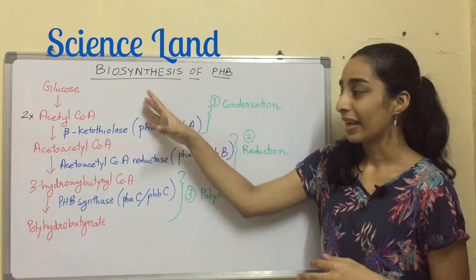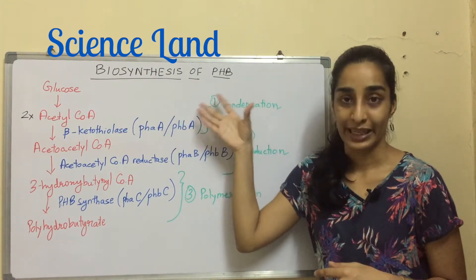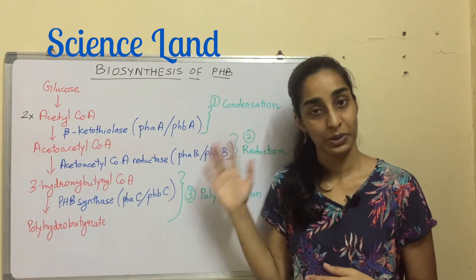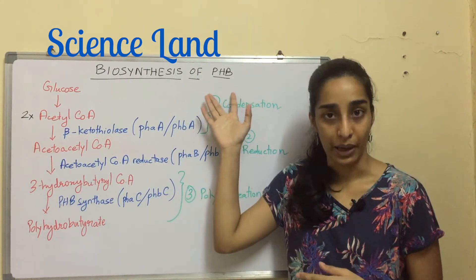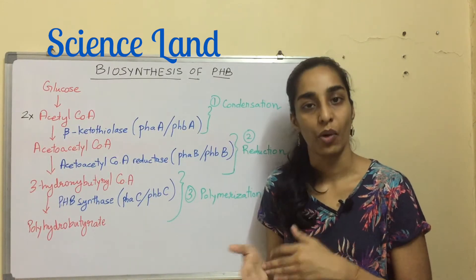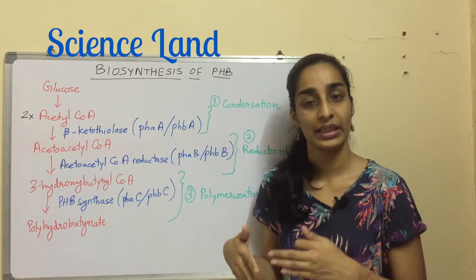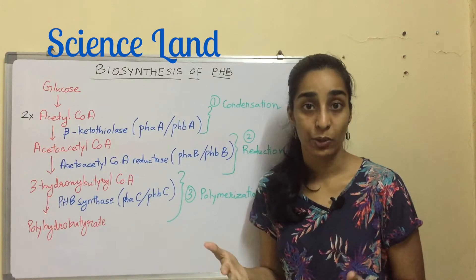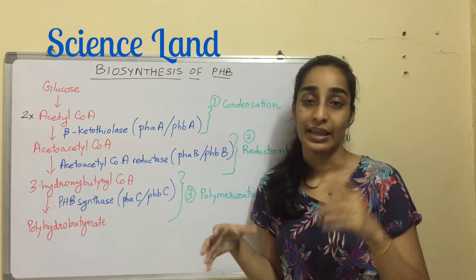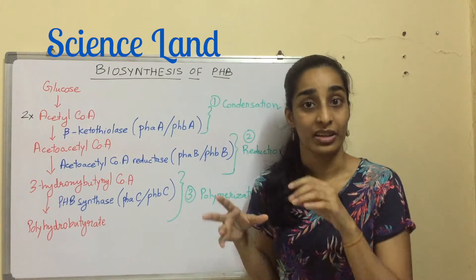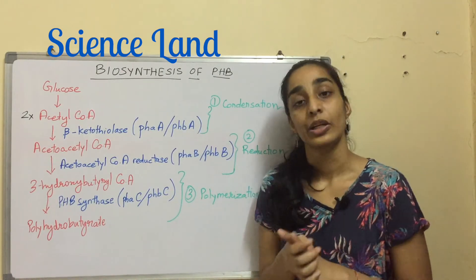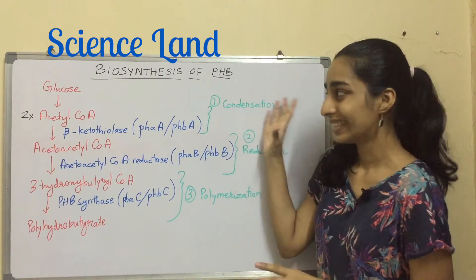Let's start the biosynthesis of PHB. PHB stands for polyhydroxybutyrate. This compound is a kind of PHA — polyhydroxyalkanoates. I have made an entire video on that; the link will be in the description box below or in the card if you want to check it out.